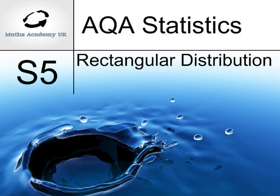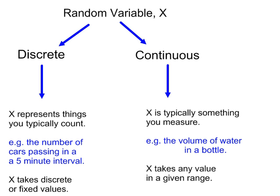An introduction to the rectangular or uniform probability distribution. In statistics, we have two types of random variables: discrete and continuous.